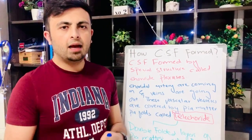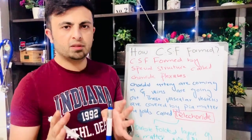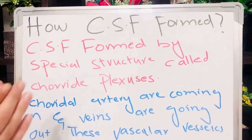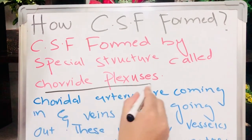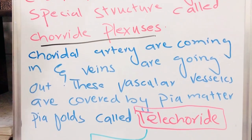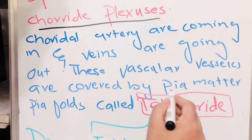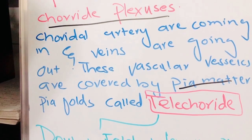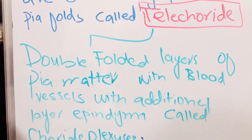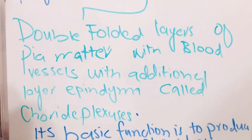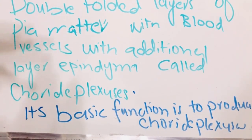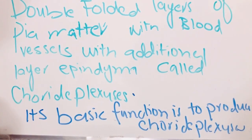Now we will see how the cerebrospinal fluid is made and how its movement occurs. The cerebrospinal fluid is formed by the special structure called the choroid plexus. Choroidal arteries come in and veins go out. These vascular vessels are covered by our pia mater, and the folds of pia mater are called tela choroidea — basically double-fold layers of pia mater with blood vessels and an additional layer of ependyma, together called the choroid plexus.